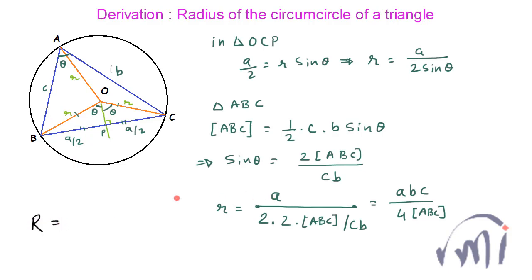So capital R will be equal to the product of all the three sides of the triangle divided by 4 times the area of the triangle, right?